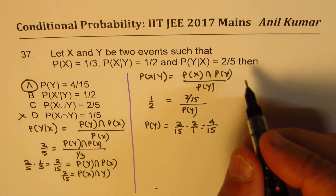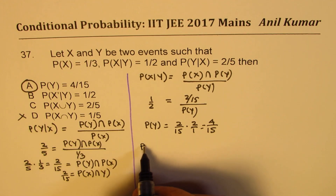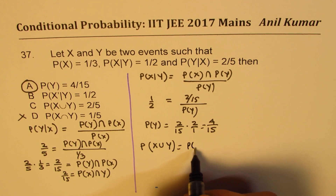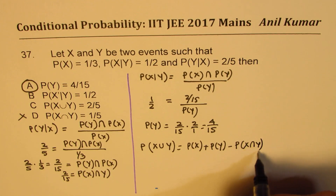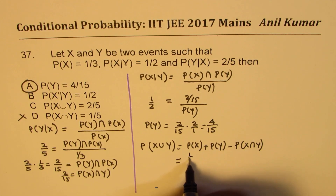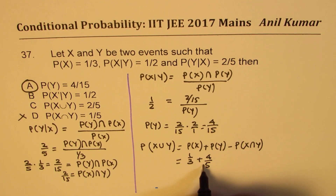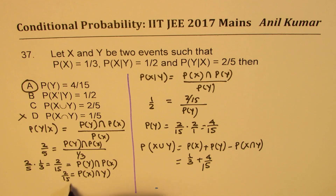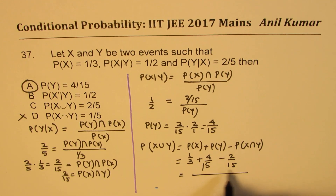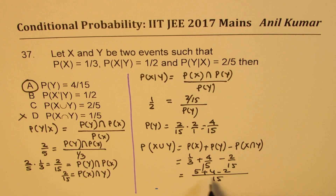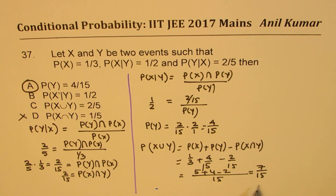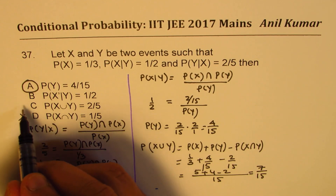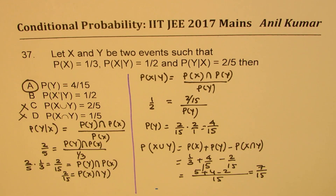We can now calculate the union of X and Y. Probability of X union Y equals probability of X plus probability of Y minus probability of X intersection Y. Probability of X is one over three, probability of Y is four over 15, and the intersection is two over 15. The common denominator is 15, so we get five plus four minus two, which is seven over 15. So the union is seven over 15, which is not the correct answer for that option.